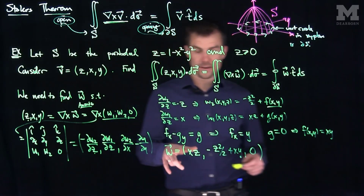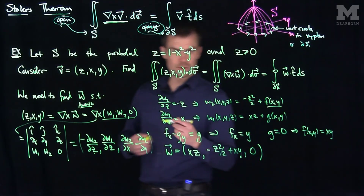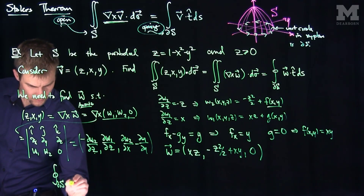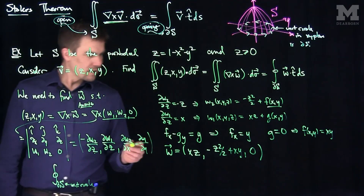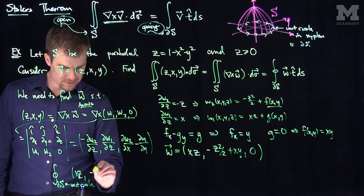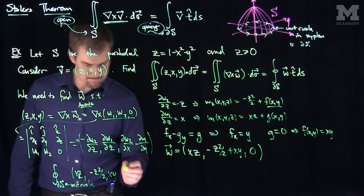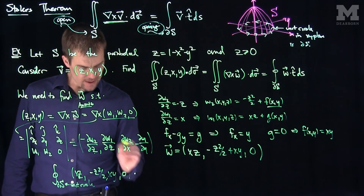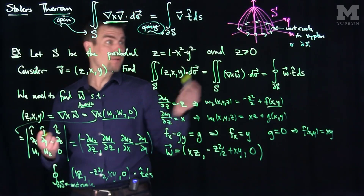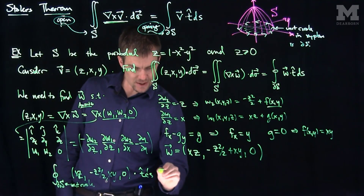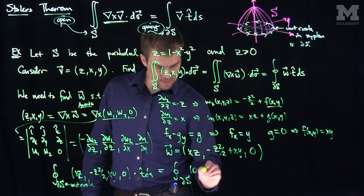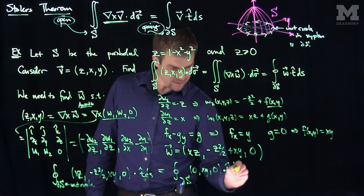Now we need the flow of W over the unit circle. The flow integral over the unit circle is the integral of (xz, −z²/2 + xy, 0) dot t-hat dS. On the unit circle, z = 0, so all the z-terms vanish. This simplifies to the flow over the unit circle of (0, xy, 0) dot t-hat dS.